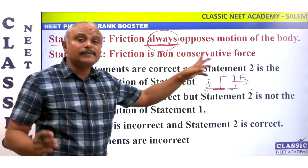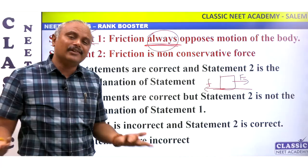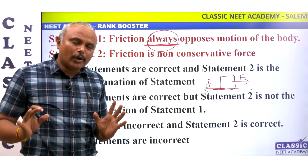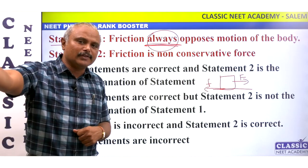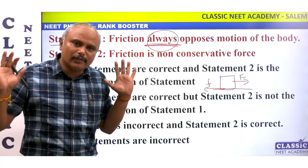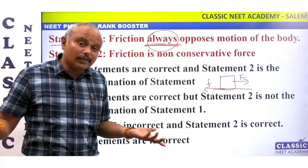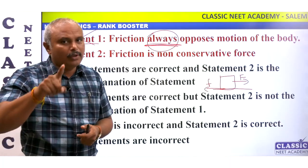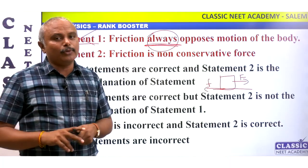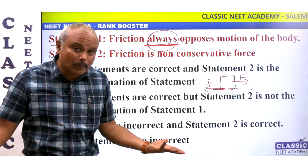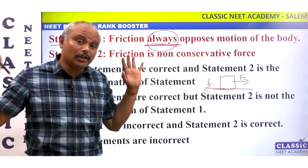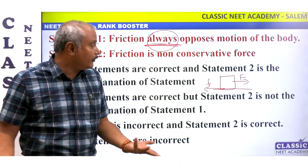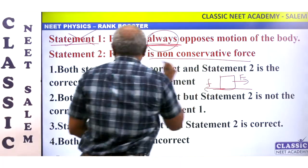Statement 2: Friction is a non-conservative force. This is correct — it is non-conservative. What is conservative and non-conservative? Work done is path independent for conservative forces. Friction is path dependent — it dissipates energy. Therefore friction is a non-conservative force. That is correct.